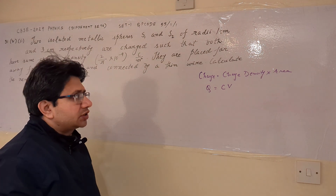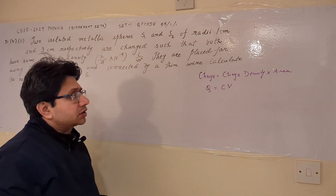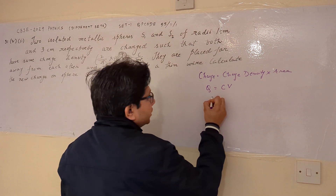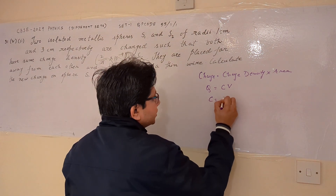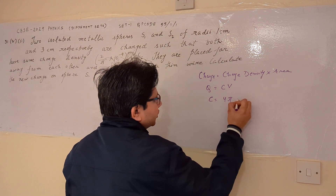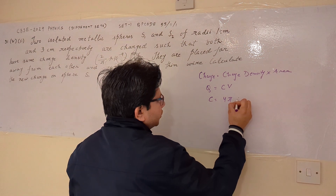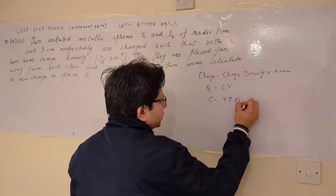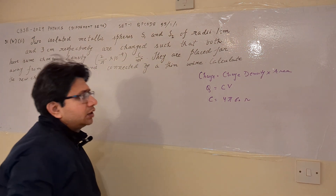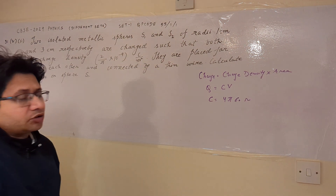potential is the same. This concept we use. And the capacitance in terms of radius for a sphere is given by 4πε₀r.